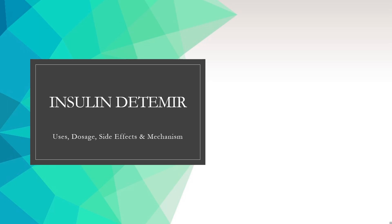Insulin detemir is a long-acting form of insulin used for glycemic control in type 1 and type 2 diabetes mellitus. In this video, let's find out: What is insulin detemir? What is it used for? Contraindications, side effects, how it works, and how to use it.